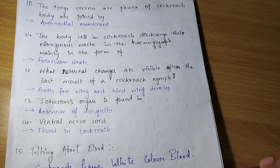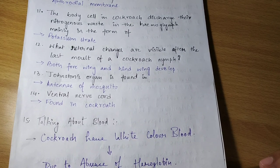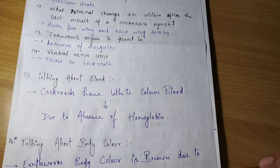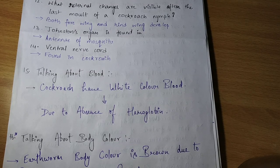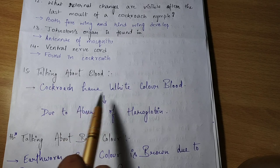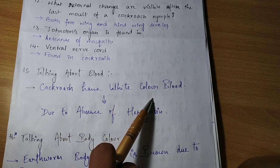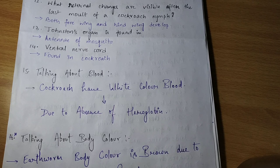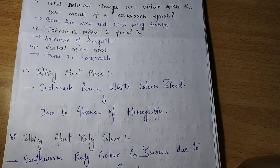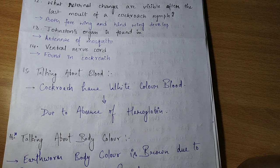Talking about blood: cockroach has white-colored blood. The blood color of cockroach is white due to the absence of haemoglobin — haemoglobin के absent होने की वजह से, वो white color का होता है।